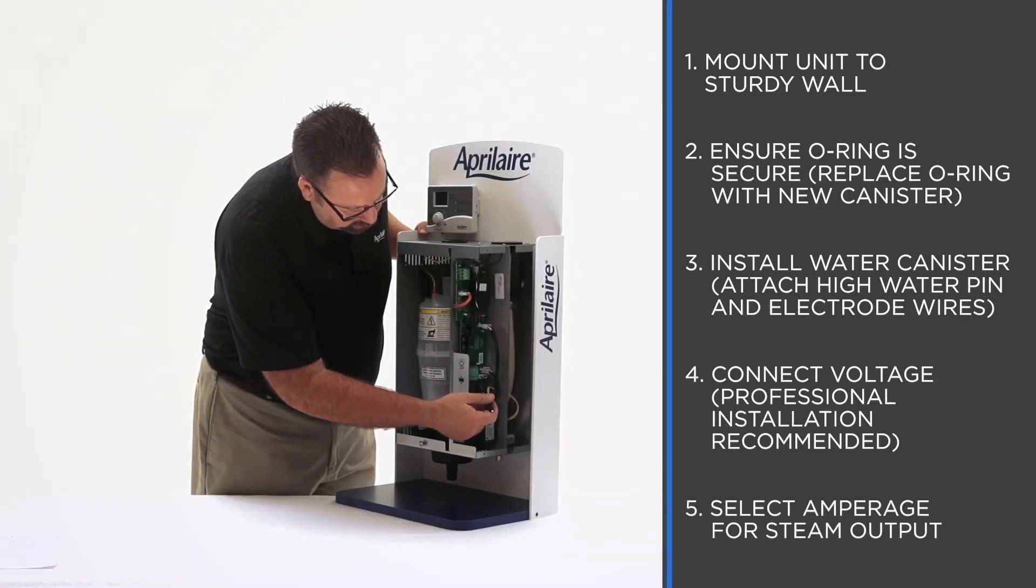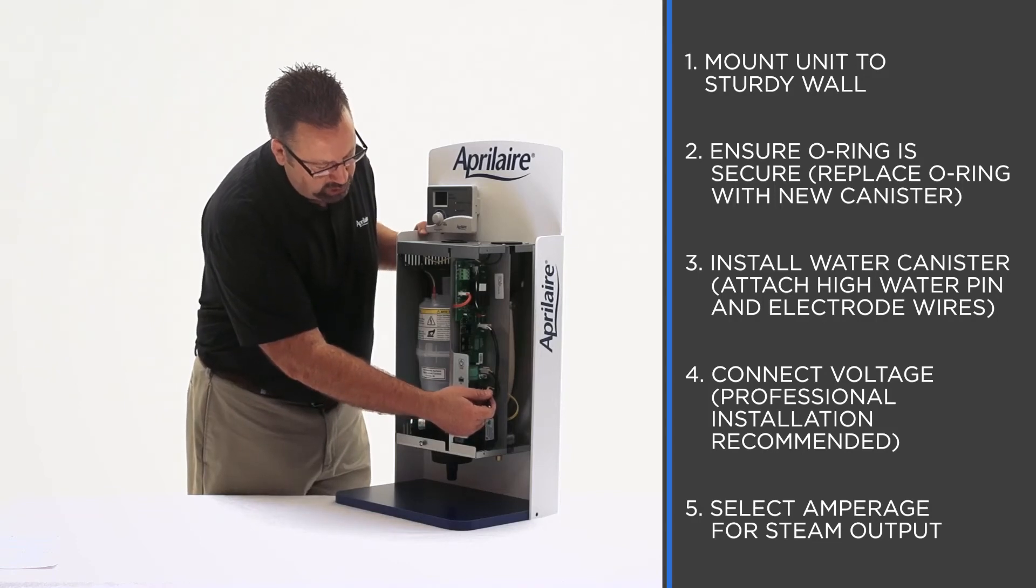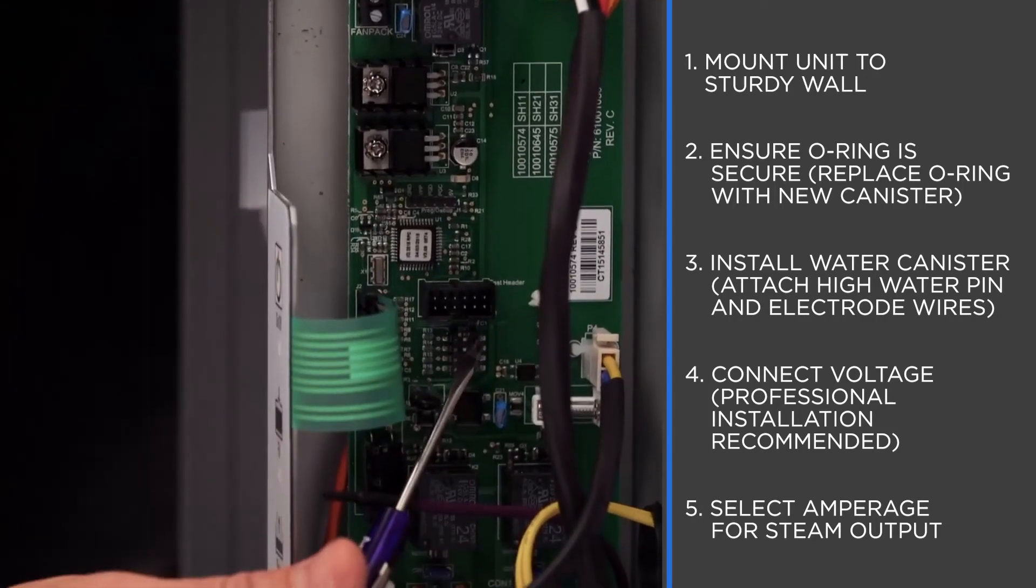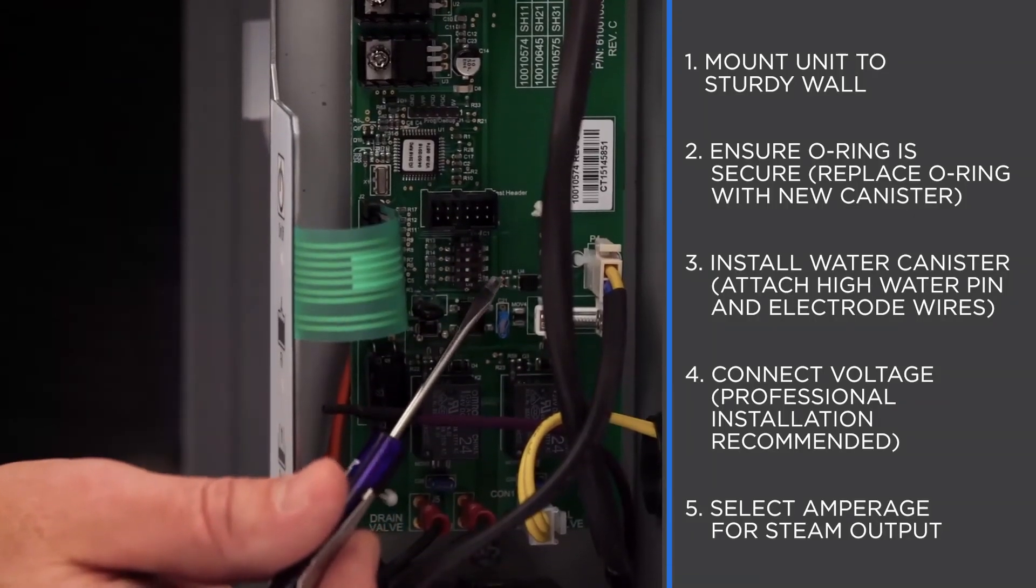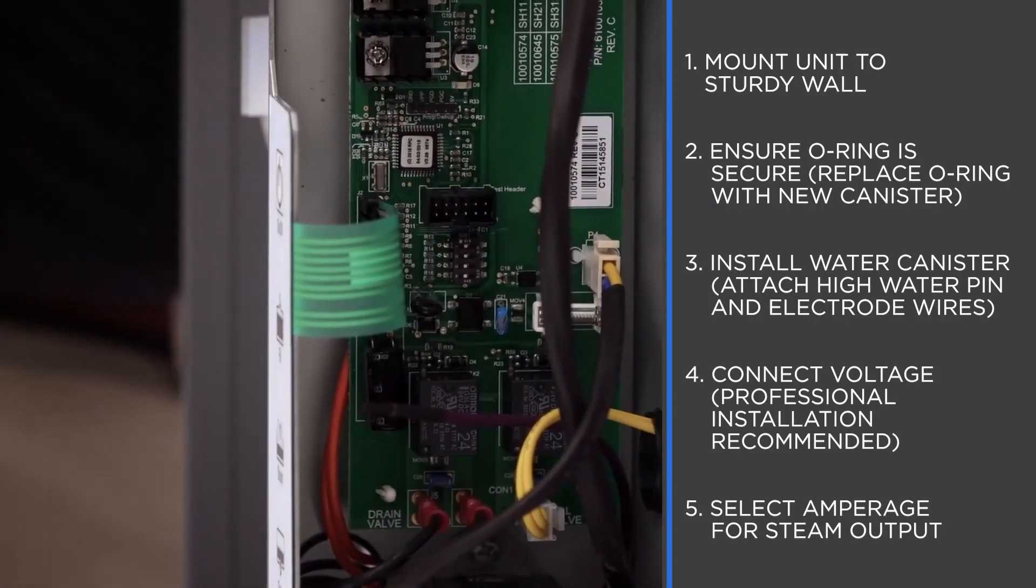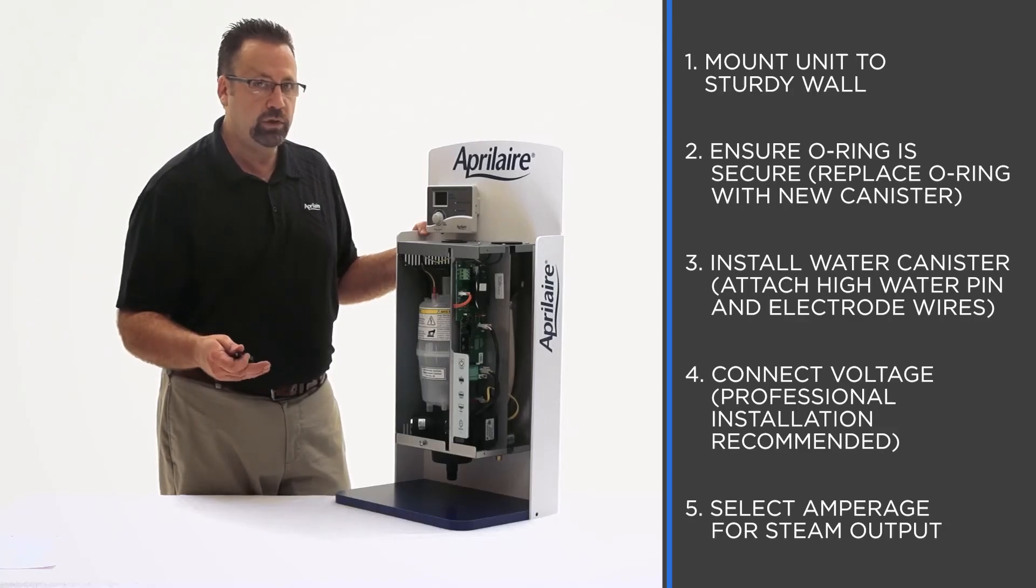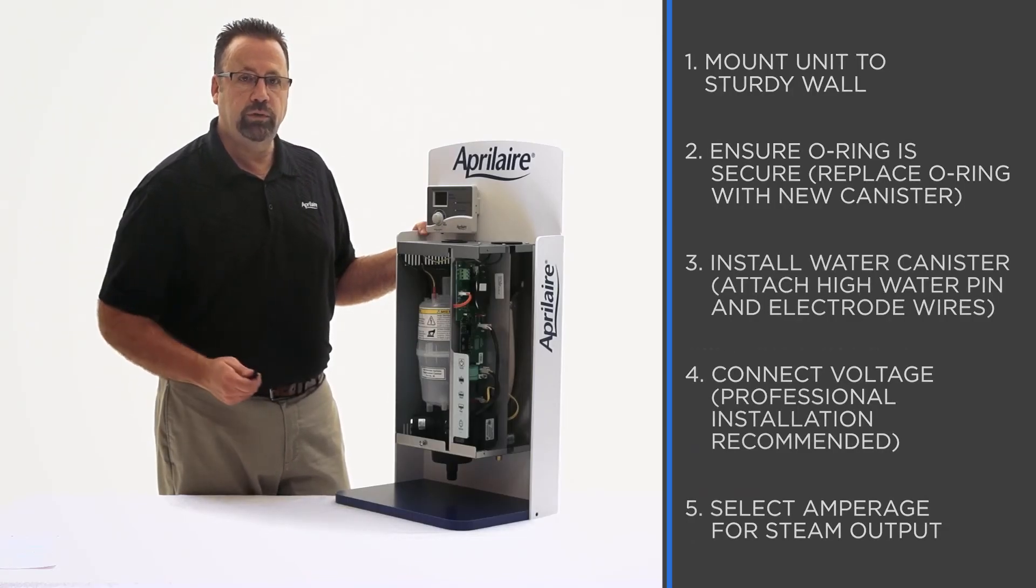And then down here is a bank of dip switches. The top dip switch selects the amperage that we allow the unit to run to. It comes preset at 11 amps and if you move the top dip switch over it will go to 16 amps. The higher the voltage, the higher the amperage, the more steam will produce.